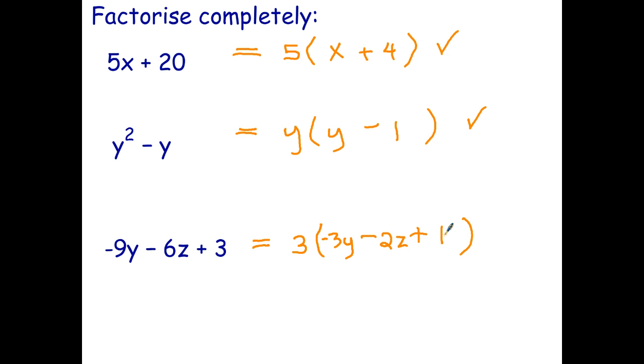Let's do a quick check on all of these by working backwards. 5 times x is 5x. 5 times 4 is 20. y times y is y squared. Minus y times 1 is y. 3 times negative 3y is negative 9y. 3 times negative 2z is, sorry, subtract 3 times 2z is subtracting 6z. And 3 times 1 is 3. So far, so good.